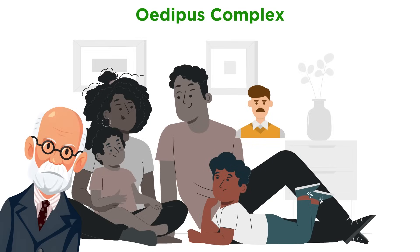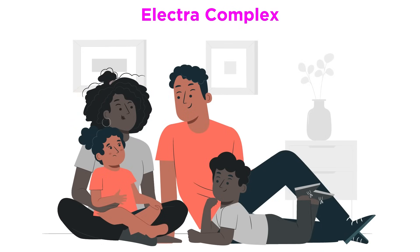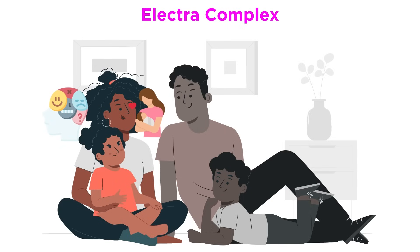In girls, a similar complex is called the Electra complex. Essentially, a young girl develops penis envy and wants to be a boy, because she desires the father but realizes she can never have him because she doesn't have a penis. To resolve the Electra complex, the girl substitutes her desire for a penis with a desire for a baby. She also blames her mother for her castrated state, which causes tension. She removes the tension by repressing her feelings and ultimately identifies with the mother to take on the female gender role.